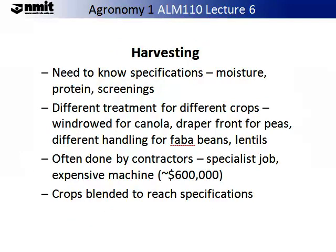It is important to get your harvesting correct. You need to know the specifications of your particular crop. For example, some grain crops require the grain to be harvested when the moisture is below a certain percent — say 15 or 12% — when your protein is above or within a range, and where your screenings are acceptable. Different treatments for different crops: wind draper front for canola, draper front for peas, different handling for faba beans and lentils. This needs to reflect your infrastructure as well. Harvesting can be and is often done by contractors, as some of the machinery is expensive and this may be a more economically viable way for you to handle and harvest your crop.